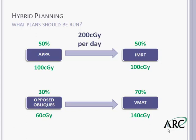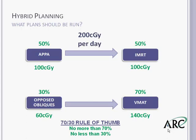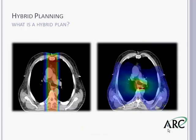In our clinic, we've typically abided by the 70-30 rule of thumb: no more than 70% and no less than 30% contribution should come from one single technique. We feel that once you exceed this balance, you lose the benefits from the complementary technique. You're not limited to what we've shown — you might use a wedge pair with IMRT for a posterior lesion, or a single anterior field with VMAT for an anterior lesion. There are a lot of possibilities, allowing the planner freedom and control.